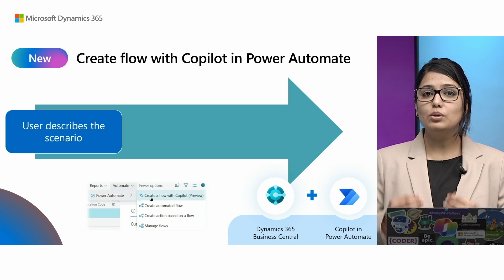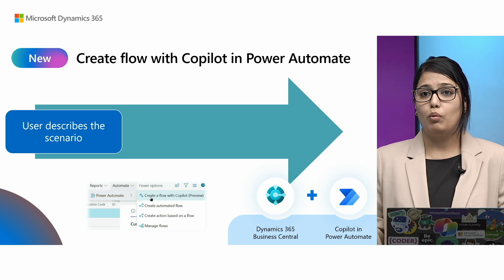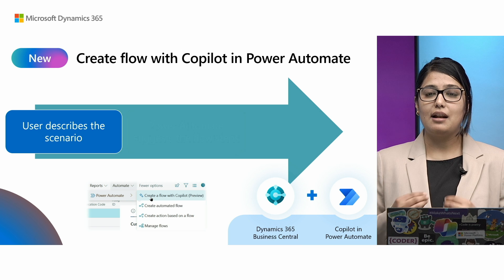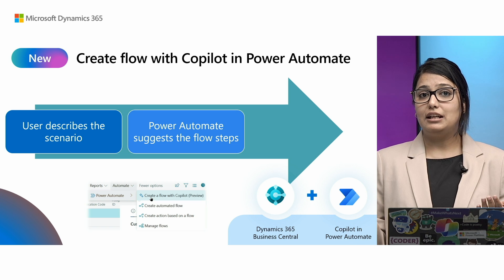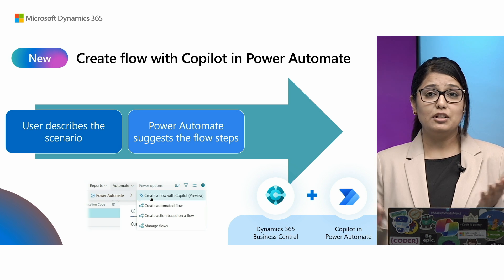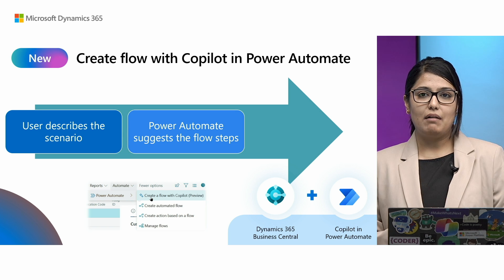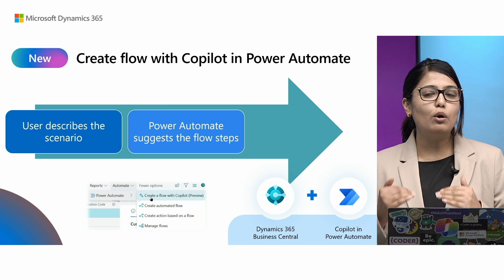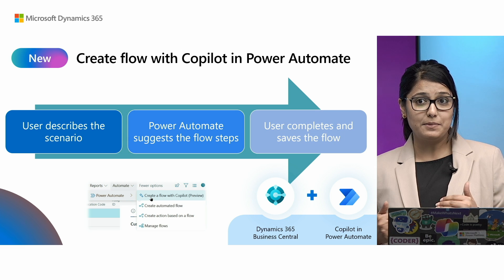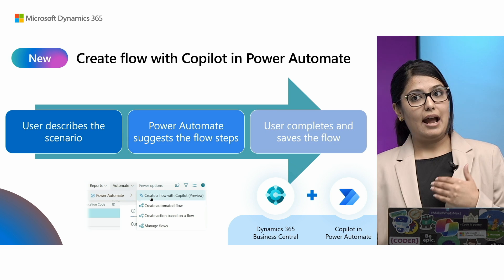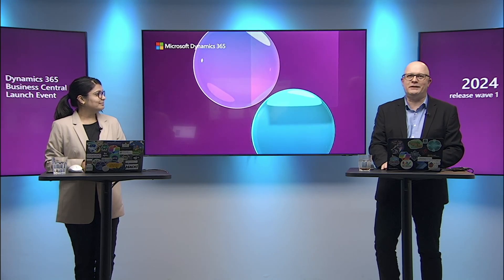The way it works is that the user starts by describing what they want to automate. Once they have described it in natural language — for example, they want to automate that whenever an item is created in Business Central, you also create a new item in a SharePoint list — this input is given to Power Automate, and then Power Automate suggests the flow steps needed to create this automation. Once the steps are suggested, the user can go ahead and fill the necessary parameters to complete the flow. It's a simple three-step process.